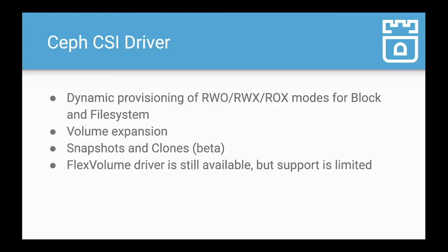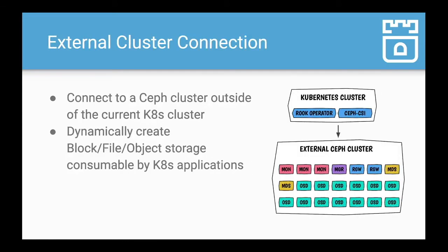The CSI driver provides a lot of Rook's functionality: dynamic provisioning of read-write-once or read-write-many volumes for both block and file system, volume expansion, and snapshots and clones (still in beta). There is an older flex volume driver still available, but support is limited and we recommend using the CSI driver. Rook also supports connecting to a Ceph cluster outside the current Kubernetes cluster — if your organization already runs a Ceph cluster, you can connect to it as an external cluster and still dynamically provision block, file, or object storage.